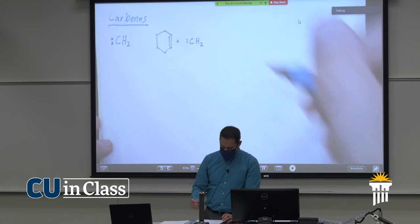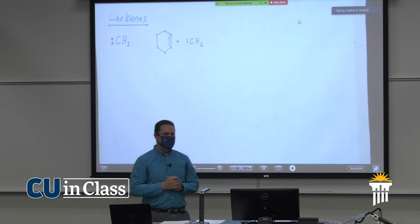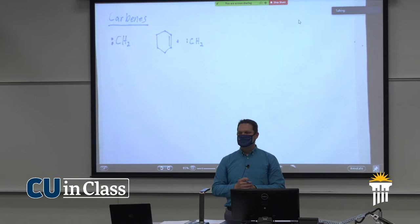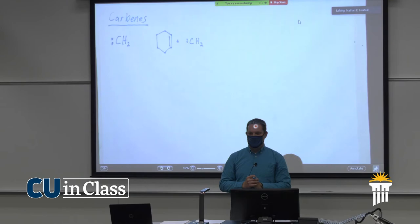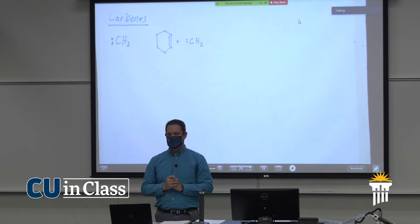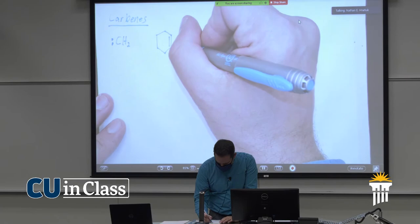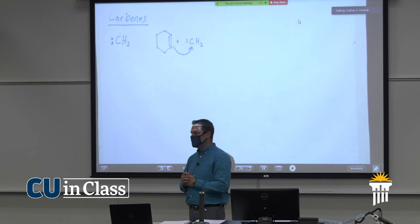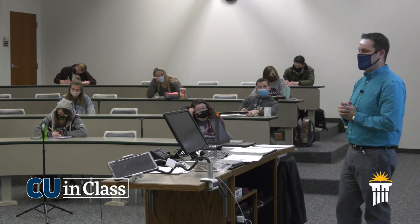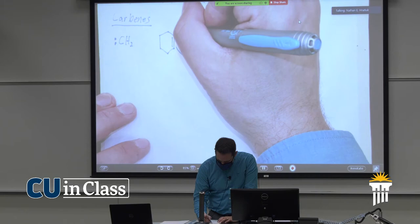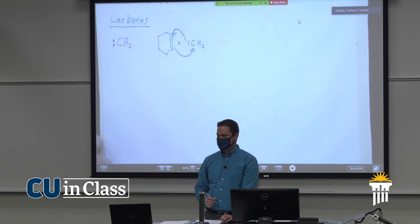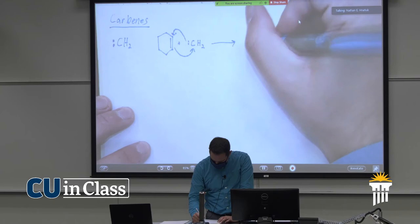That carbene carbon is sp2 hybridized, which means there's a free empty p orbital. The double bond can feed into that p orbital, forming a carbocation. The pair of electrons from one of the sp2 orbitals can then feed into it. What do I make? Cyclopropane! And this will also add syn, right? You're not going to be able to twist the three-membered ring around to be trans, so this has to add in a syn fashion on one side. In this case, it won't matter because we have a plane of symmetry.